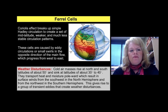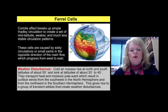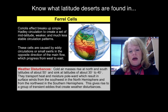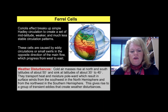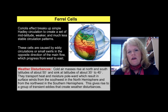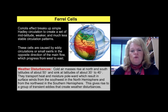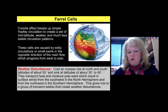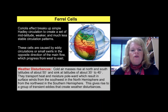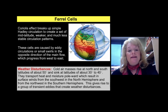The Ferrel cells are caused by the Hadley circulation and create a set of mid-latitude, weaker, and much less stable circulation patterns, resulting in some unusual weather disturbances. Cold air masses rise and sink at around 30 to 40 degrees north and south latitude. Waco, Texas sits at about 31 degrees north latitude — that's why we get some crazy weather here from time to time. Weather disturbances in the Ferrel cells are important to anyone living in the Texas area.